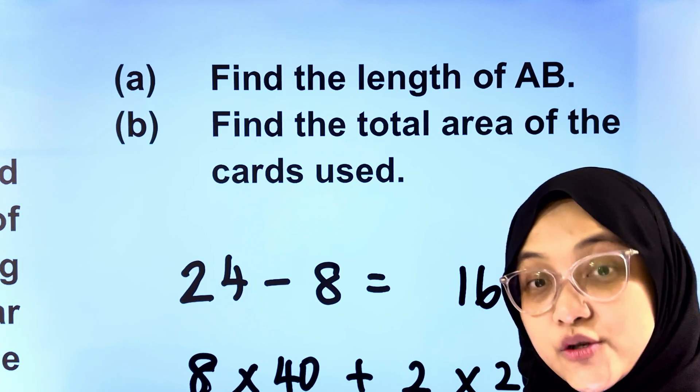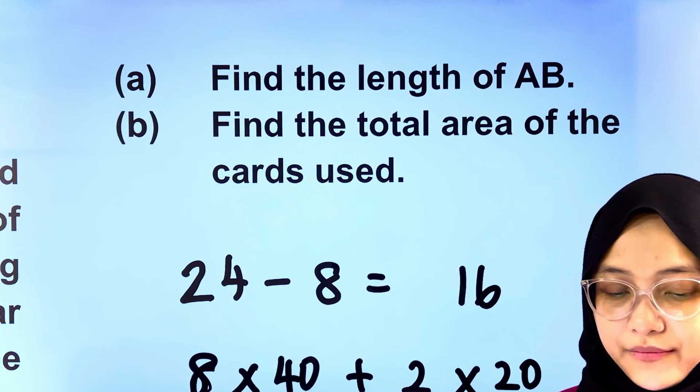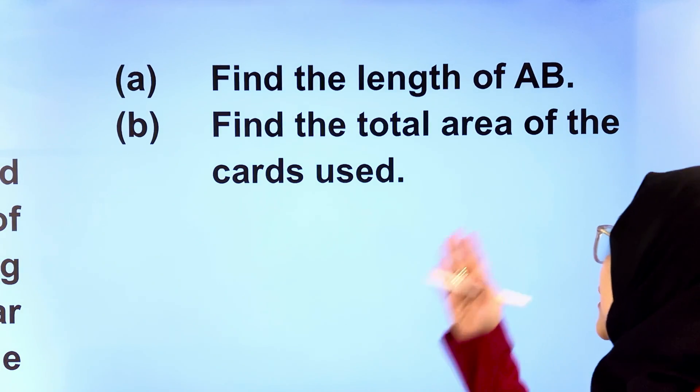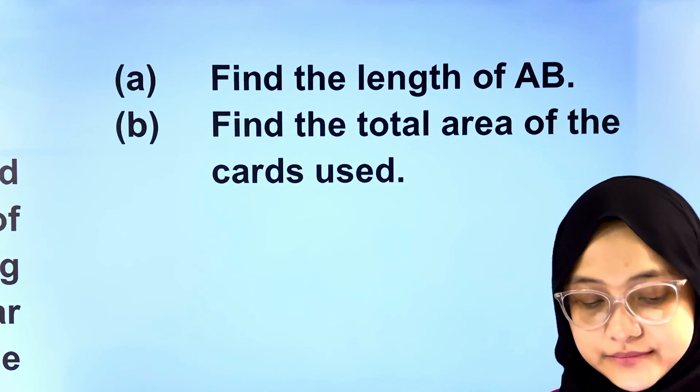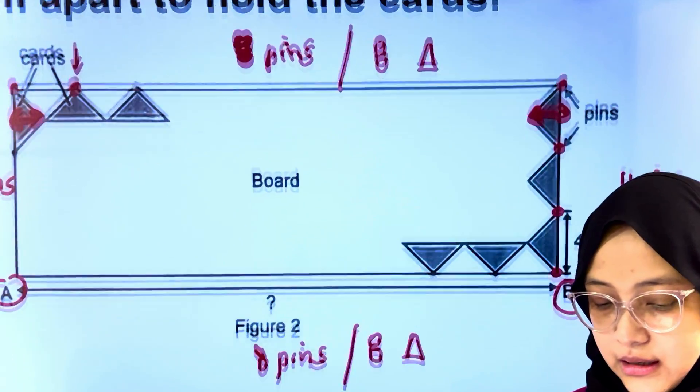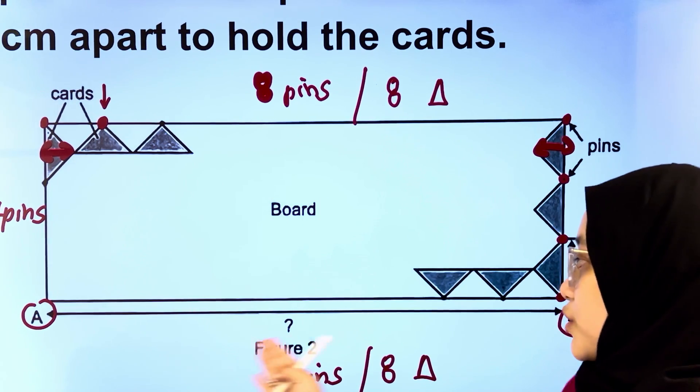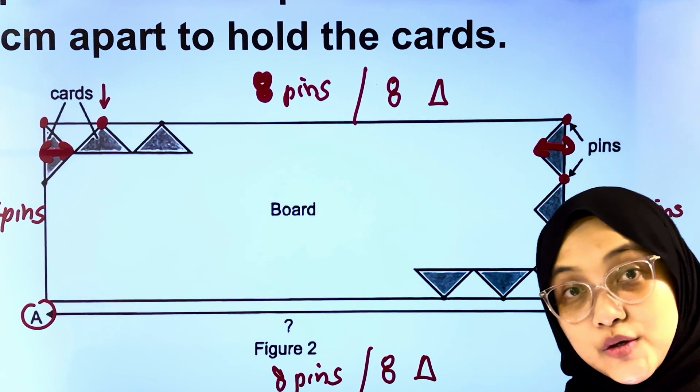Now, let's solve part B together. Let me erase away part A so I have more space. Part B, find the total area of the cuts used. Along the length, top and bottom, all together, 16 cuts were being used.